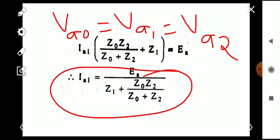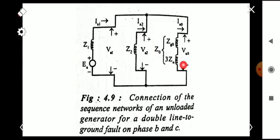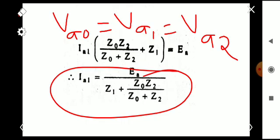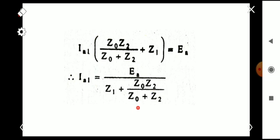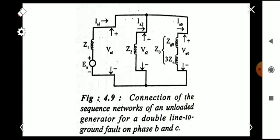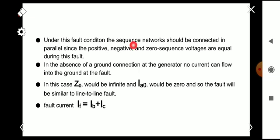We can now draw the sequence network of an unloaded generator for a double line to ground fault on phases B and C. Since VA1, VA2, and VA0 are all equal, these networks are connected in parallel. The impedance here is Z1 plus Z0·Z2/(Z0+Z2), which means Z0 and Z2 are in parallel, and their equivalent impedance is connected in series with Z1.